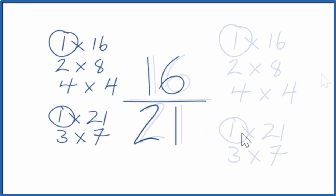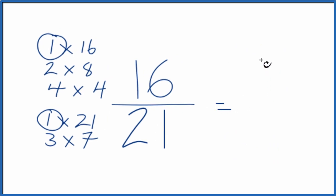Let's move these over here. So 16 divided by 1 is 16, 21 divided by 1 is 21, and we're back where we started.